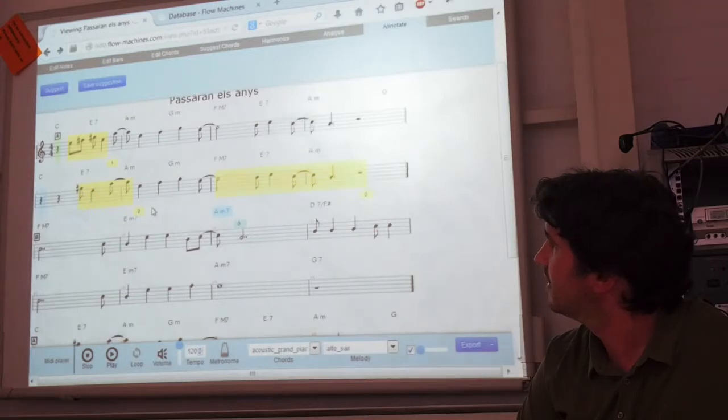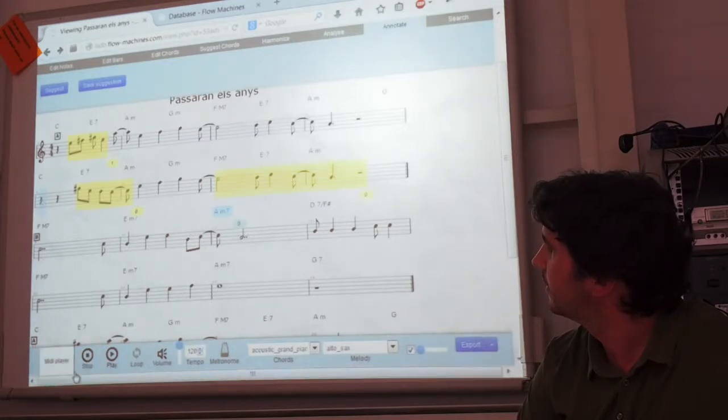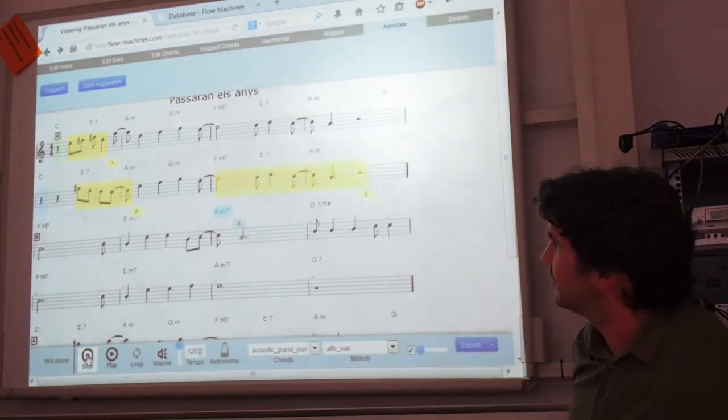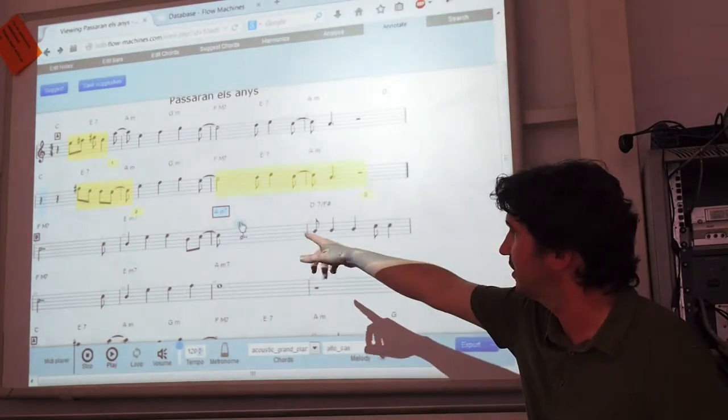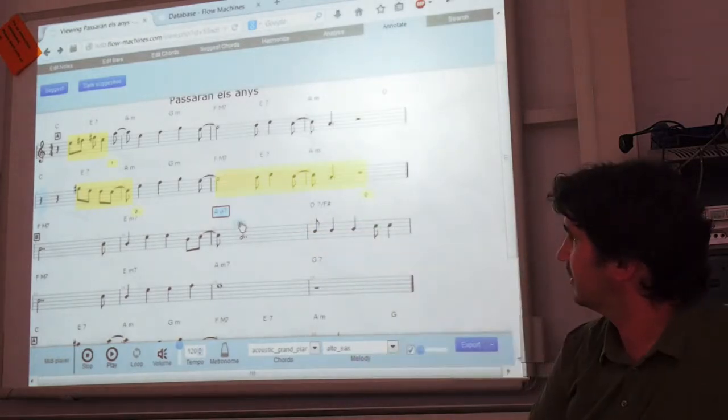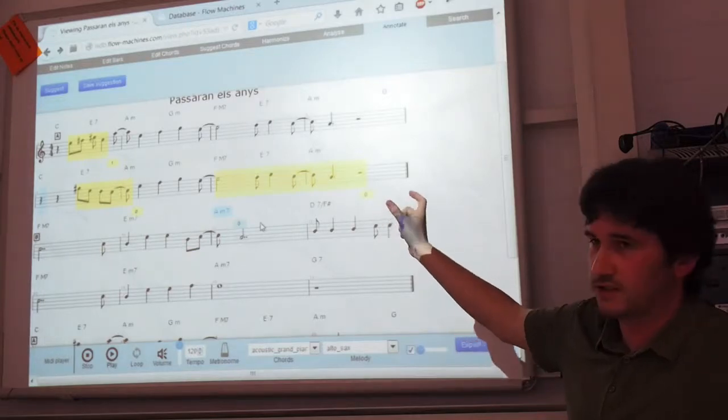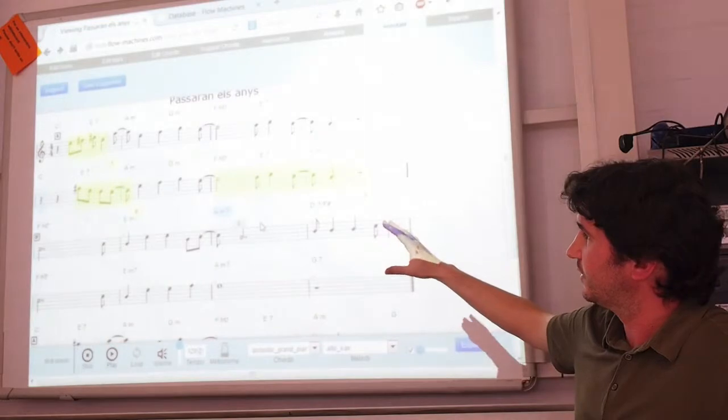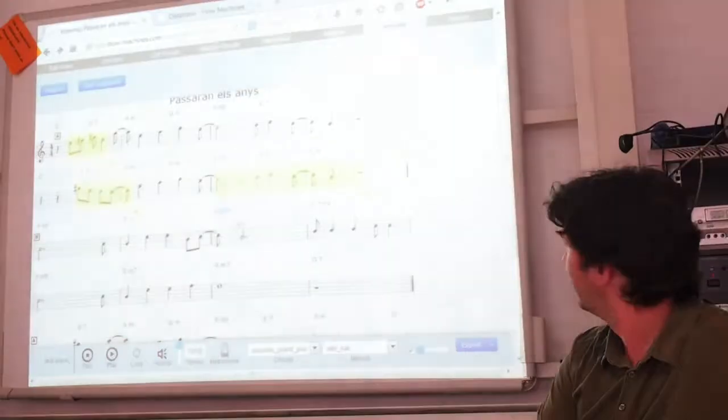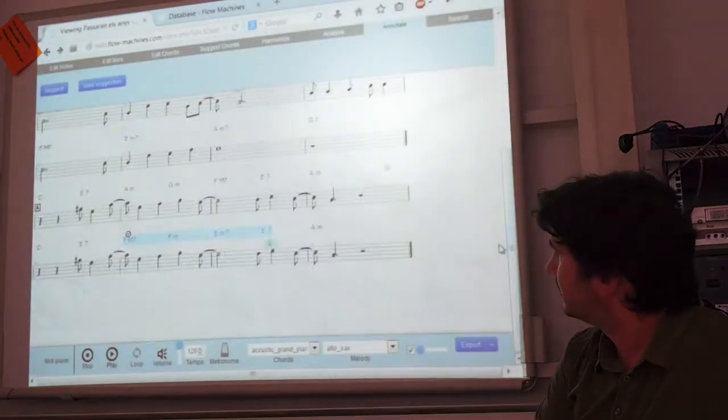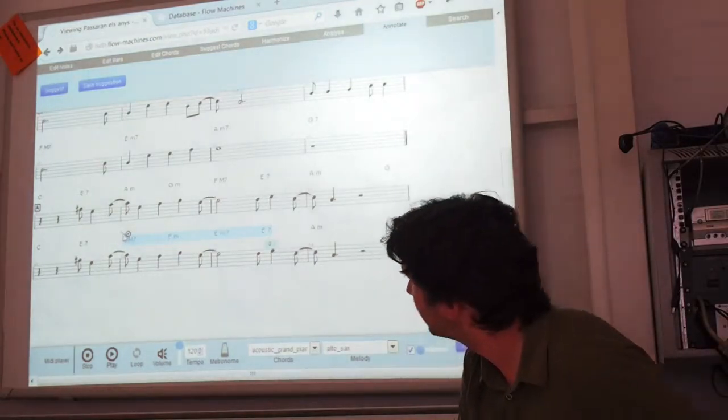So these are the types of changes we can do. We can also, like I said, here this is another proposition of another chord. So basically these are the suggestions of modifications, the score feedback. There are also the comments feedback and the audio feedback as we saw. So that's all.